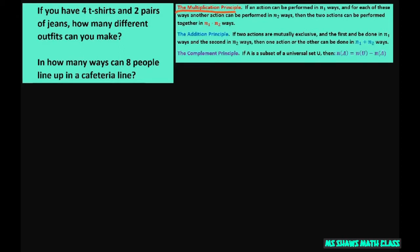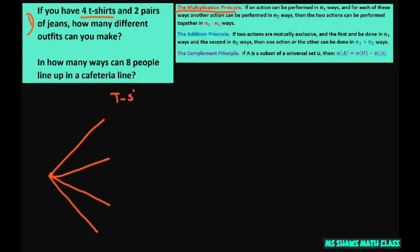I'm also going to show you how to use a tree diagram. Basically, a tree diagram goes from left to right. If I have four t-shirts, for the tree diagram I'm going to make four branches — one, two, three, four. Here I'm going to write t-shirts.